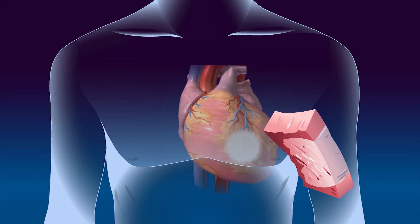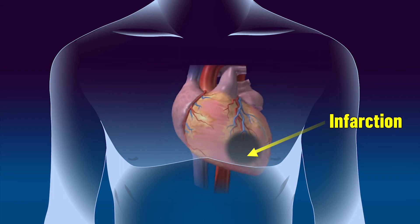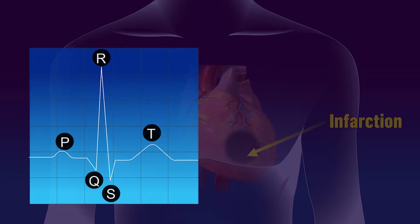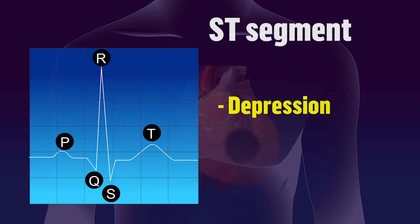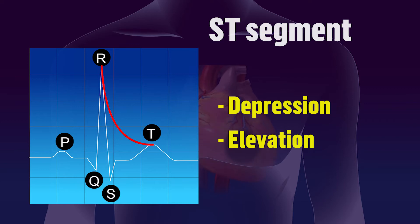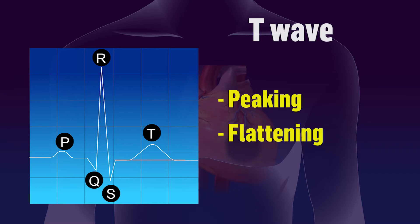If untreated, the tissues eventually die completely — a condition called infarction. This causes ischemic changes to appear on the ECG as changes in Q waves, ST segments, and T waves. ST segment changes lead to depression or elevation, while T wave changes lead to peaking, flattening, or inversion.